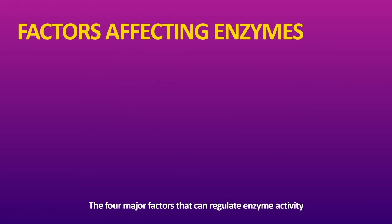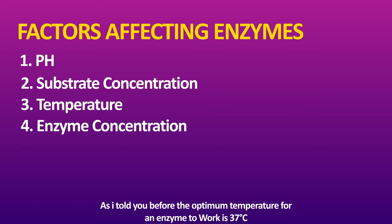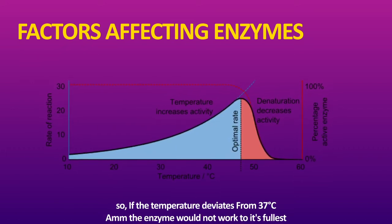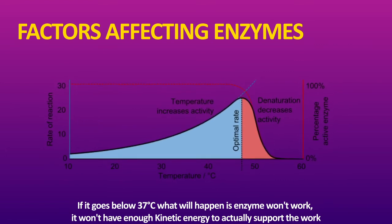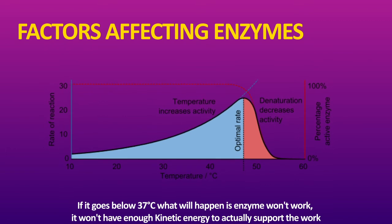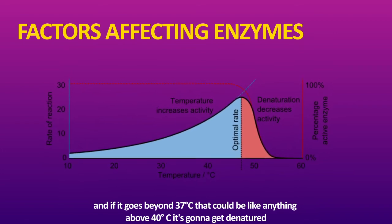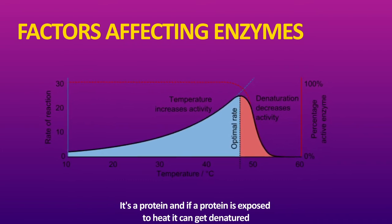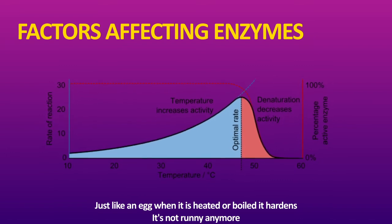Now talking about the factors that regulate enzyme activity. The four major factors are pH, substrate concentration, temperature, and enzyme concentration. The optimum temperature for an enzyme to work is 37 degrees Celsius. If temperature deviates from this, the enzyme will not work to its fullest. If it goes below 37 degrees Celsius, it doesn't work because it does not have enough kinetic energy. If it goes beyond 37 degrees Celsius — say above 40 degrees — the enzyme will get denatured, as it is a protein.